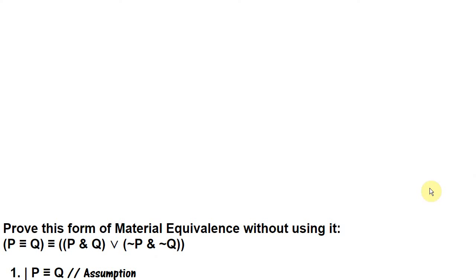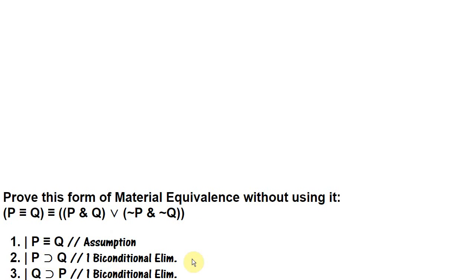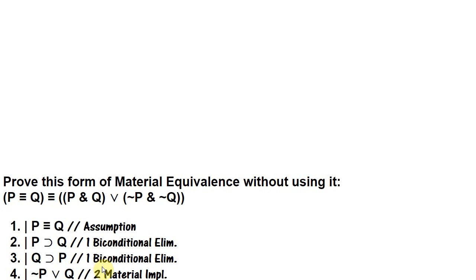We start by assuming 'p if and only if q' and want to get 'p and q or not p and not q.' Since it's a disjunction we're trying to prove, we can get it through a constructive dilemma. To use constructive dilemma we need a disjunction and two conditionals. We know the biconditional is equivalent to two conditionals, and a conditional is also equivalent to a disjunction. So 'if p then q' on line two is equivalent to 'not p or q,' which can serve as the disjunction we need.